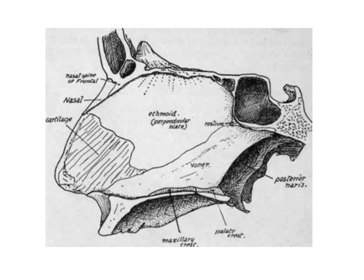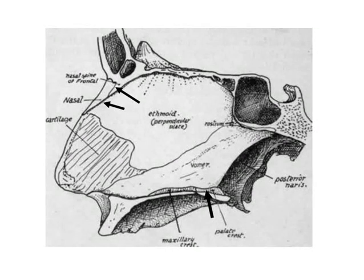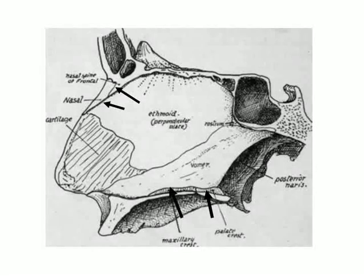There are bony contributions to the nasal septum. These are the inner aspect of the spine of the frontal bone, the inner aspect of the nasal bone, the crest of the nasal bones, the crest of the palatine bones, the crest of the maxilla, and lastly the rostrum of the sphenoid.